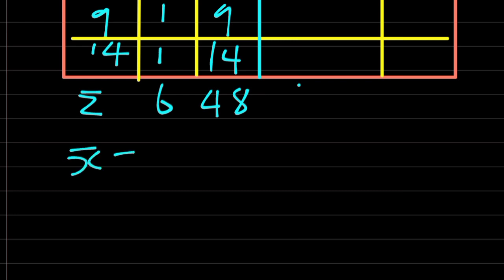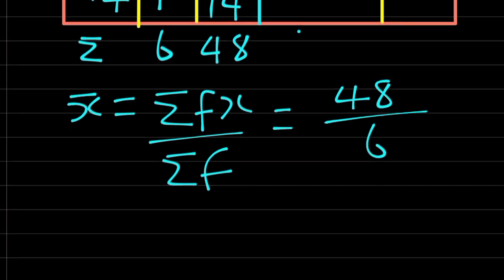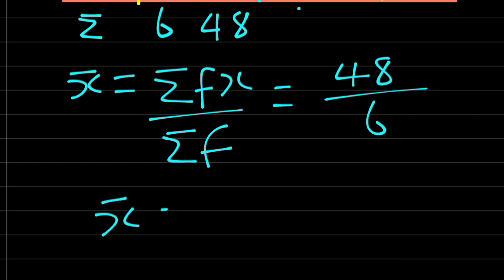Therefore, our mean is giving us summation of f of x over summation of f. The f of x is 48, while the summation of f is 6. Therefore, the mean is equal to 24 over 3, that is equal to 8.